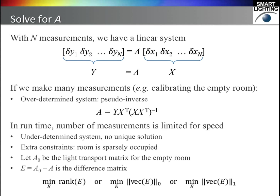However, in the runtime, we may not be able to make so many measurements because of the speed of sensors. Thus our linear system is underdetermined. We can add extra constraints to get the unique solution. For example, we can assume the room is sparsely occupied, and we can do some low-rank recovery or sparse recovery. I am not going into the math details, but you can find the details in our papers.